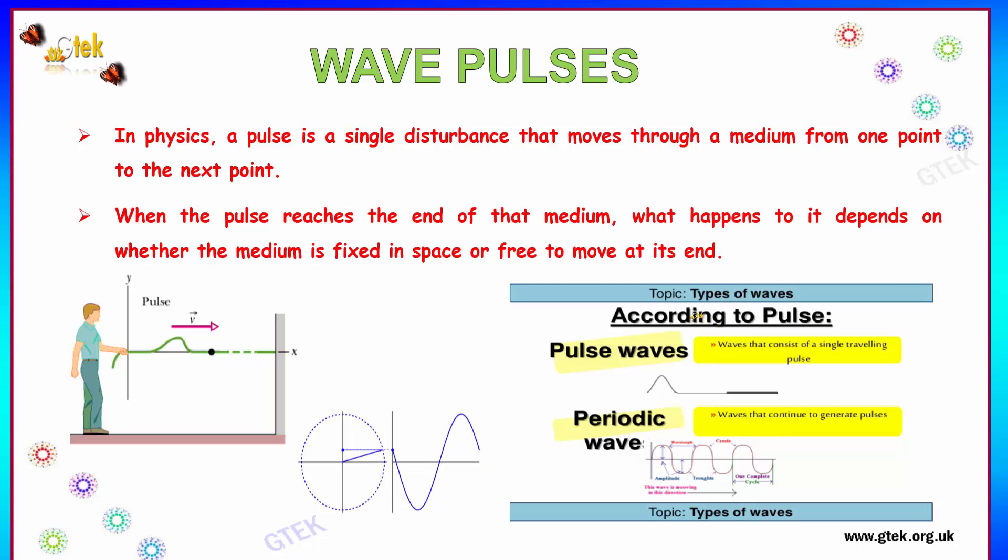According to pulse, pulse waves consist of a single travelling pulse. You can find here the single travelling pulse. In terms of periodic waves, these are waves that continue to generate pulses. This was a single travelling pulse, and this is the periodic wave where the wave is continuing to generate its pulse.